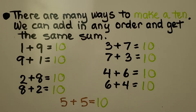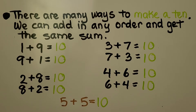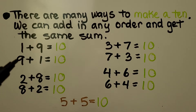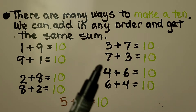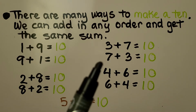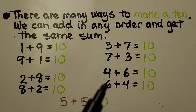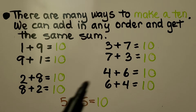There are many ways to make a 10. We can add in any order and get the same sum. We can add 1 plus 9, or 9 plus 1, to equal 10. We can add 2 plus 8 or 8 plus 2 to equal 10. 3 plus 7 or 7 plus 3. 4 plus 6 or 6 plus 4. And we know the doubles fact: 5 plus 5 is equal to 10.